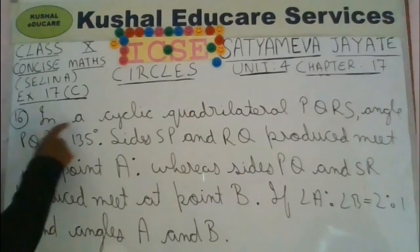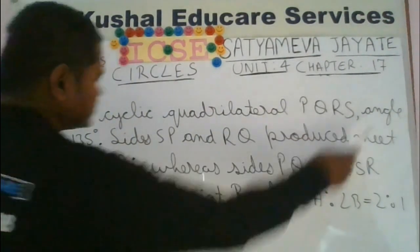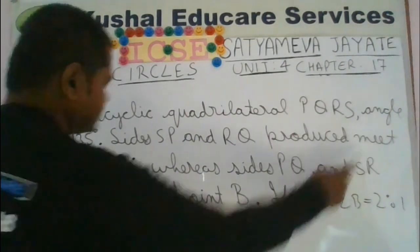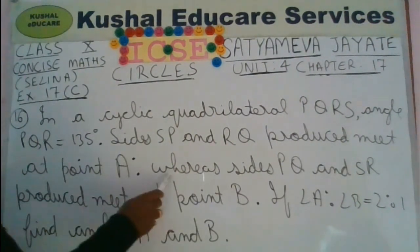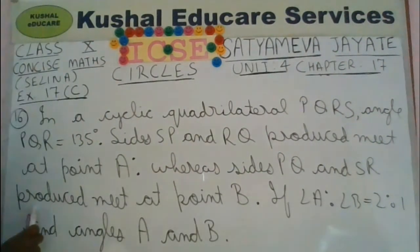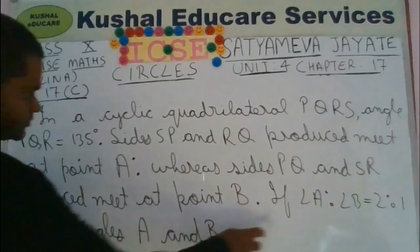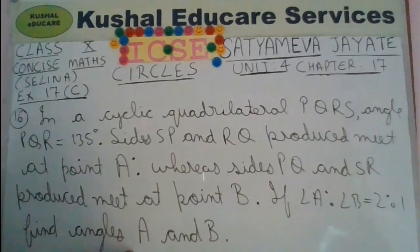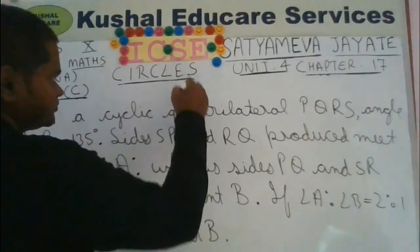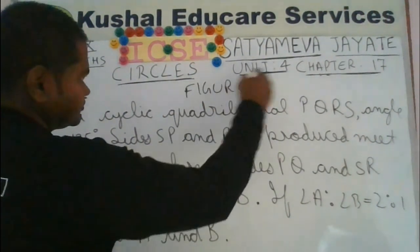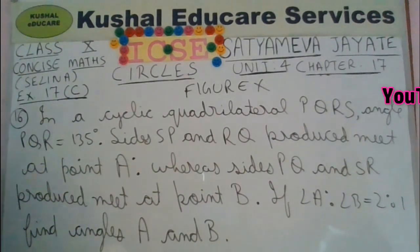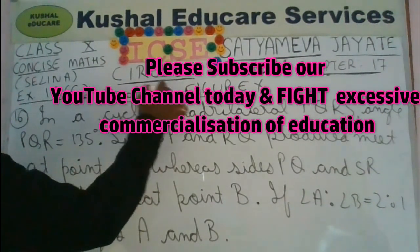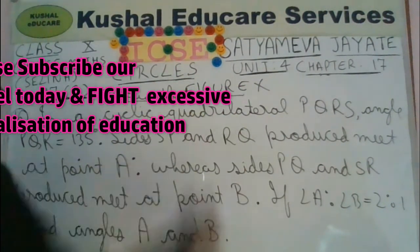In cyclic quadrilateral PQRS, angle PQR equals 135 degrees. Sides SP and RQ produced meet at point A, while sides PQ and SR produced meet at point B. The ratio of angle A to angle B is 2 to 1, and we need to find angles A and B. An important point is that no figure is given, so you must draw a proper figure — take the help of a ruler.